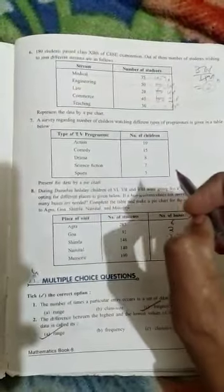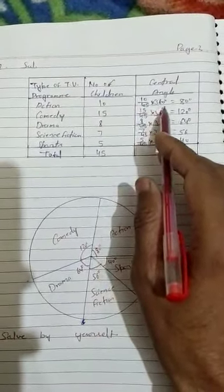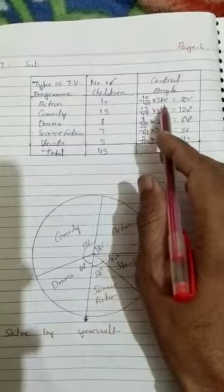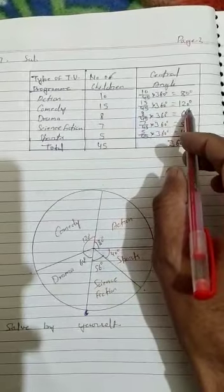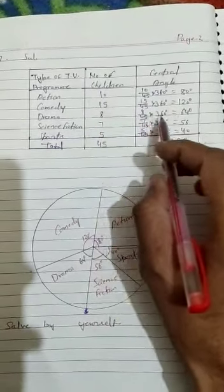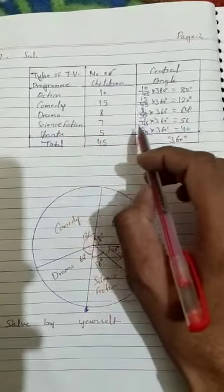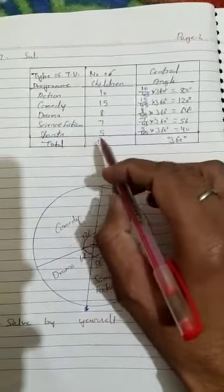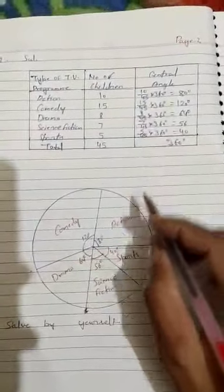Comedy 15, Drama 8, Science Fiction 7, Sports 5. Action 56 degrees, Comedy 15 so here is angle 120 degrees, Drama 8 so here is angle 64 degrees, Science Fiction 7 so here is 56, and last is Sports so here is 40 degrees.